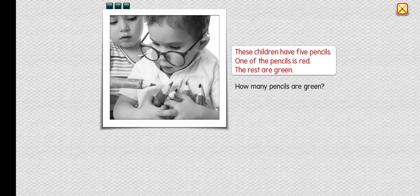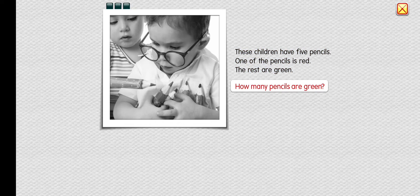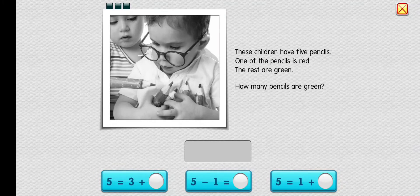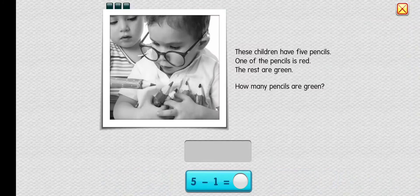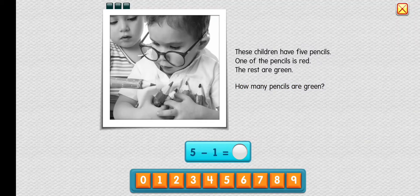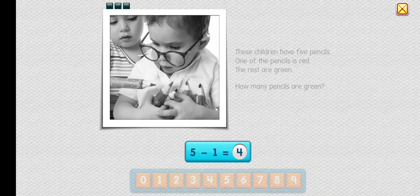These children have five pencils. One of the pencils is red; the rest are green. How many pencils are green? Four. Great — five pencils minus one red pencil equals four green pencils.